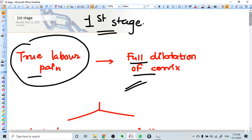The process of first stage starts with uterine contractions and ends with full cervical dilatation. The events in this stage are not equal all the time.